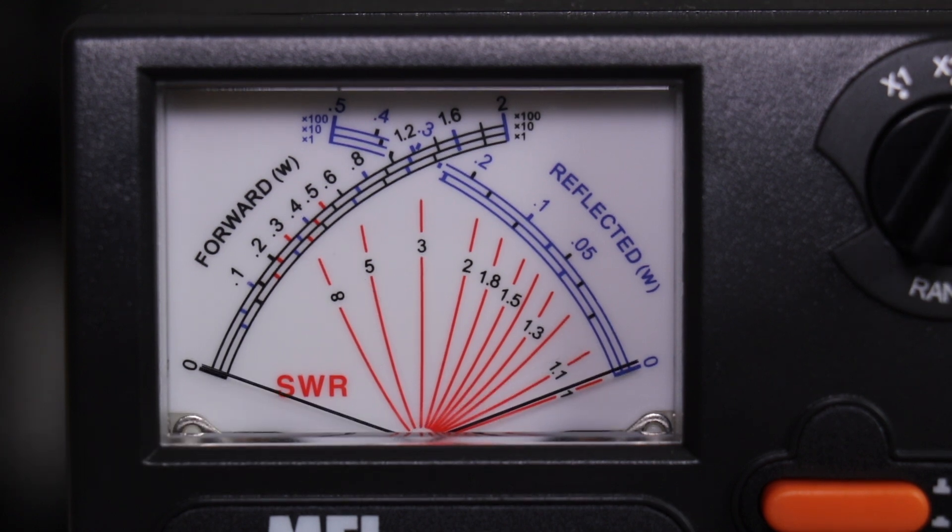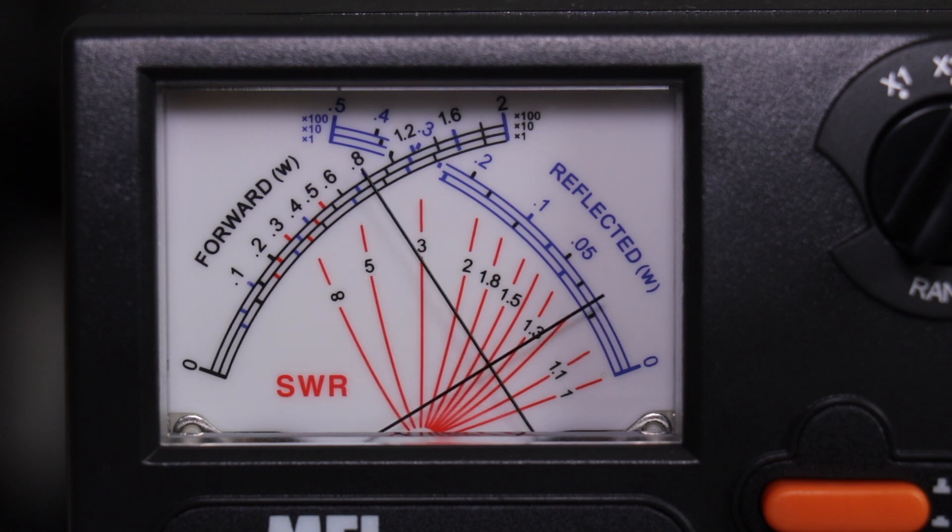I have the meter set to the 200 watt capacity and I've got the radio set to high which is 80 watts. We are getting 80 watts and we are about 1.4 SWR.